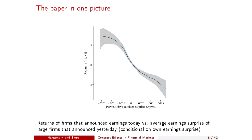On the x-axis is our measure of the attention-grabbing surprise yesterday — big firms that announced the previous day — with the left side representing negative earnings surprise and the right side positive. The y-axis is the return response to earnings today, conditional on the level of earnings actually announced. What you can see is: when yesterday's news was bad, returns all else equal are higher — that's the top left corner. When yesterday's news was really good, the return response is lower — that's the bottom right corner. It's pretty consistent across the whole support of surprises.